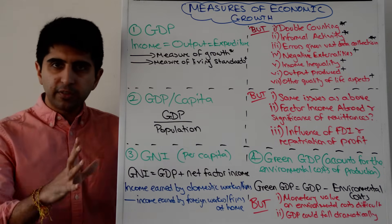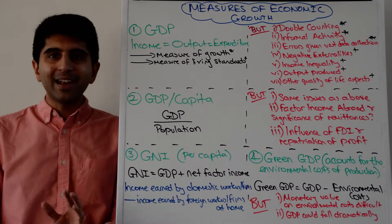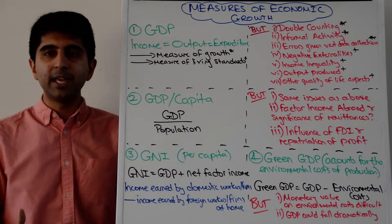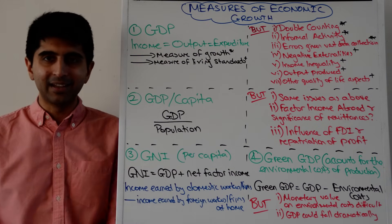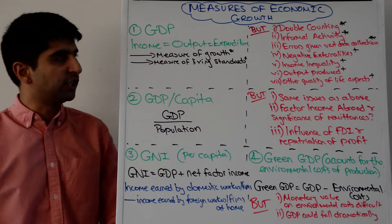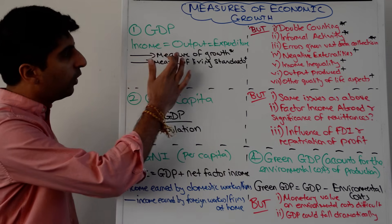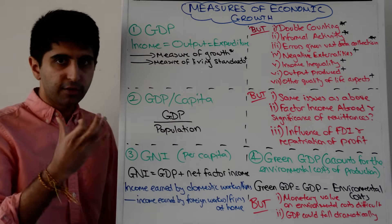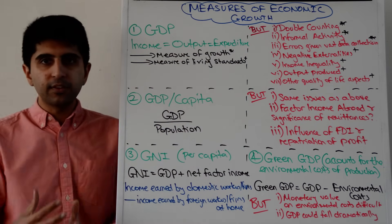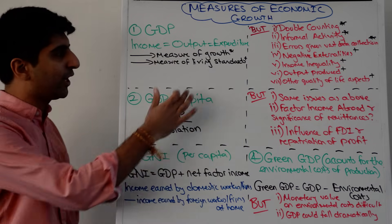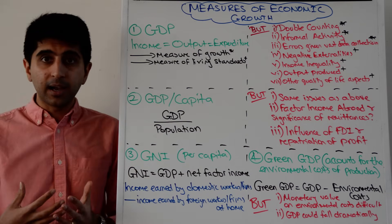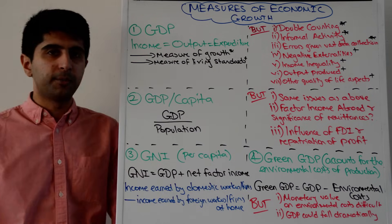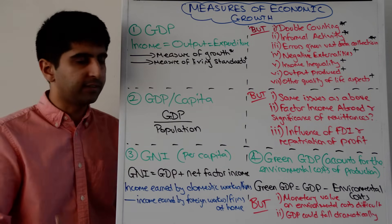GDP — you need to know the definition — is the value of all final goods and services produced in an economy in a year. That is the definition of GDP. The benefit of using GDP is that it gives us a measure of growth, but also a measure of living standards in the economy. Because it measures income, the idea is if GDP goes up, incomes in the economy go up, thus giving us a measure of living standards.